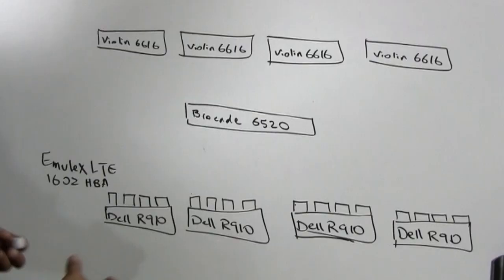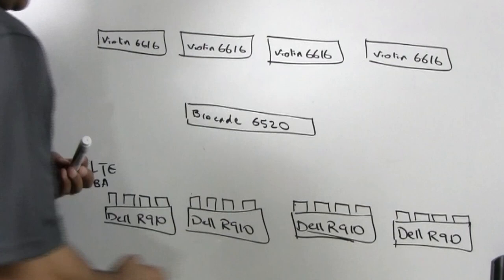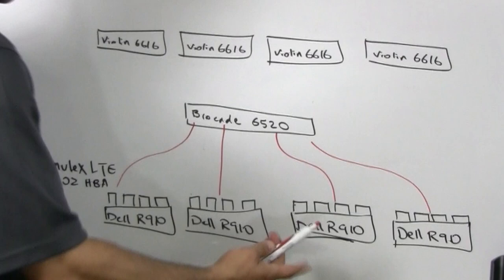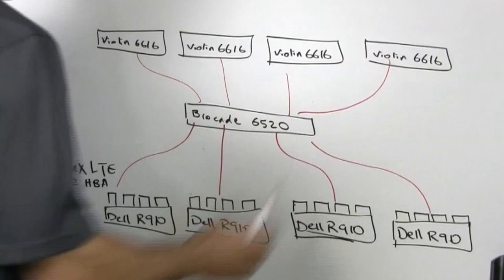So for the test we ran a product called FIO. Walk me through how that executed. We ran the FIO instances generating load on the Dell R910s. Each Dell saw 16 LUNs being exported through the HBA. So we had all these connections going through the switch fabric and then talking to the violin arrays on the other side.